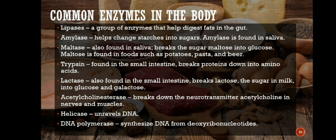Trypsin, found in the small intestine, breaks proteins down into amino acids. Lactase, also found in the small intestine, breaks lactose — the sugar in milk — into glucose and galactose. Acetylcholinesterase breaks down the neurotransmitter acetylcholine in nerves and muscles. Helicase unravels DNA. DNA polymerase synthesizes DNA from deoxyribonucleotides. We have more enzymes in the body, but these are the most common.